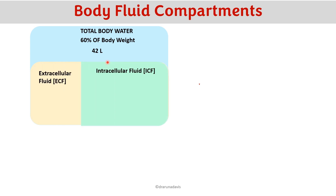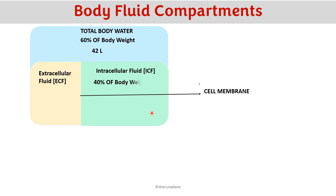Intracellular fluid is the fluid present inside the cells, and it is separated from extracellular fluid by the cell membrane. Two-thirds of the water is present inside the intracellular fluid — around 28 liters, which is 40% of the body weight. The remaining 20% is in the extracellular fluid, amounting to around 14 liters.